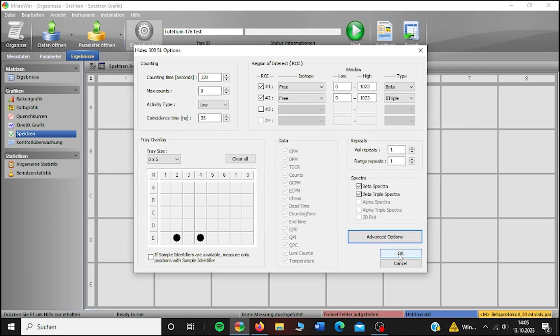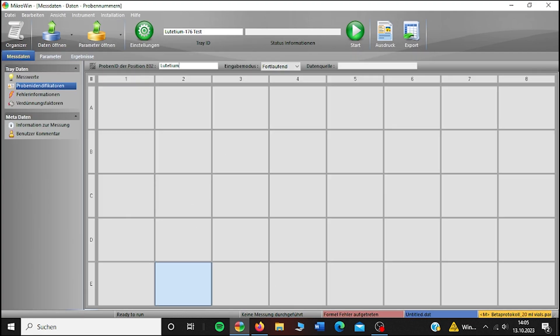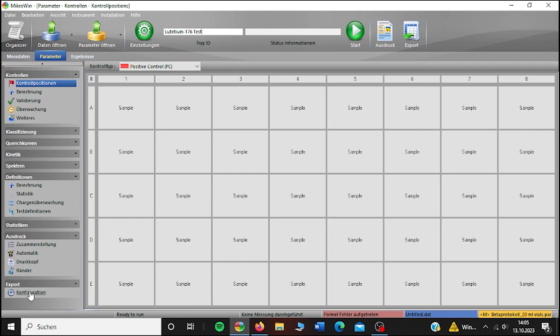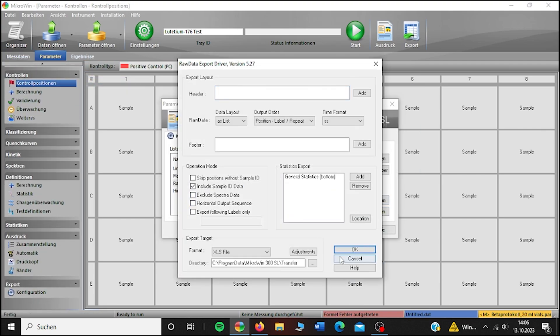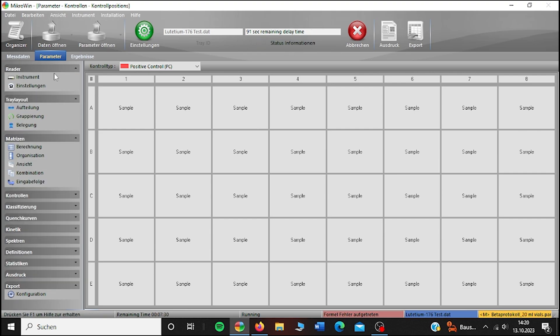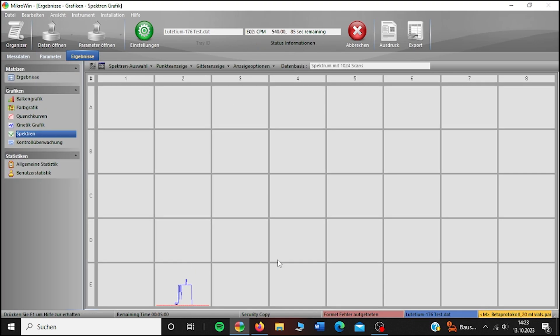Once everything is set, under measurement data, click and correctly name the fields. Under parameters, do not exclude raw export driver and spectra data. And once all the delays are finally over, you will get the first results under results.